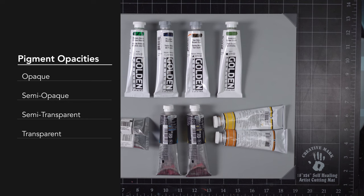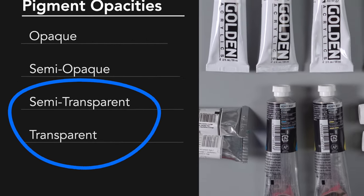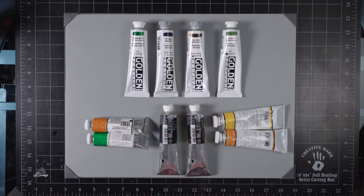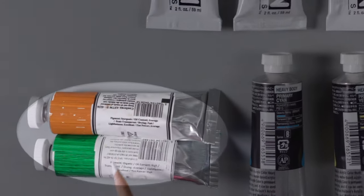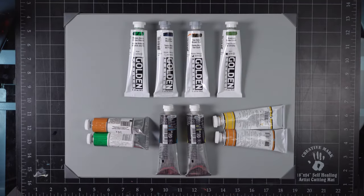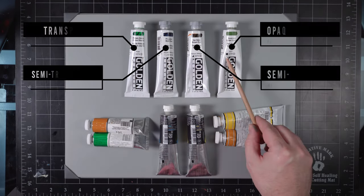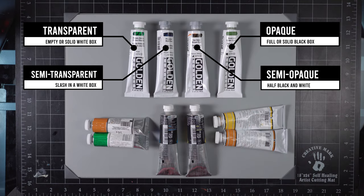Regardless if you use oil or acrylics, your paints will either be opaque, semi-opaque, semi-transparent, or transparent. Ninety-five percent of the time we're going to be reaching for those transparent or semi-transparent tubes of paint for glazing. Each manufacturer has their own way of noting the transparency on a tube of paint. Some companies will literally spell it out for us, other manufacturers will use iconography such as blocks, while others will use bar graphs.